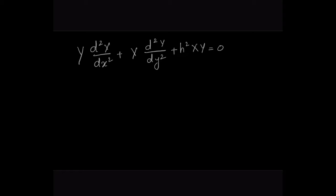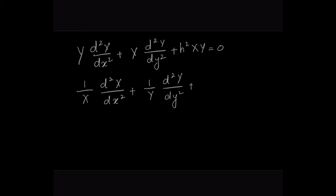For simplifying the equation and reducing complication, we have written it just as X and Y instead of X(x)·Y(y). Now, dividing the entire equation by XY, this can be written as (1/X)·(d²X/dx²) + (1/Y)·(d²Y/dy²) + h² = 0. So let this be equation 3.